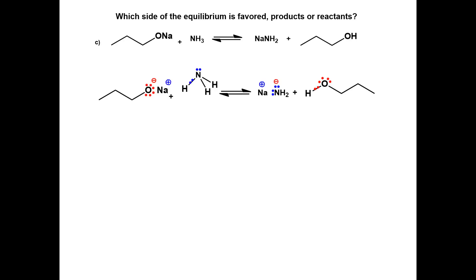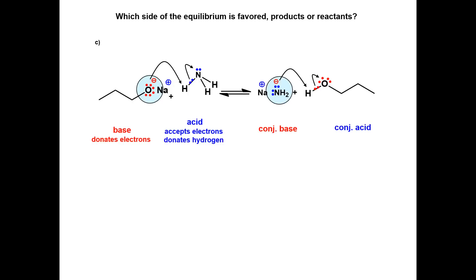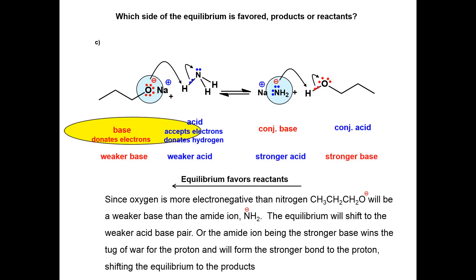Which side does this equilibrium favor? First, put lone pairs and charges on the atoms and identify the acids and bases on both sides of the reactions. Now that you have identified the acids and bases on both sides of the equilibrium, determine relative base strength. Since oxygen is more electronegative than nitrogen, the alkoxide ion will be a weaker base than the amide ion. The equilibrium will shift to the weaker acid-base pair, the reactants. Or the amide ion, being the stronger base, wins the tug of war for the proton and will form the stronger bond to the hydrogen, shifting the equilibrium to the reactants.